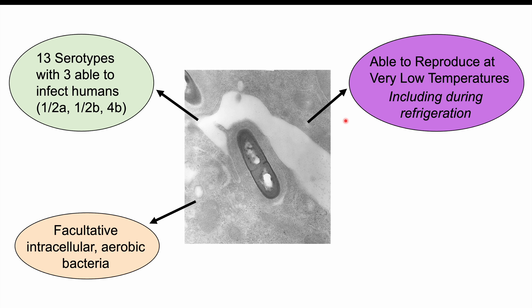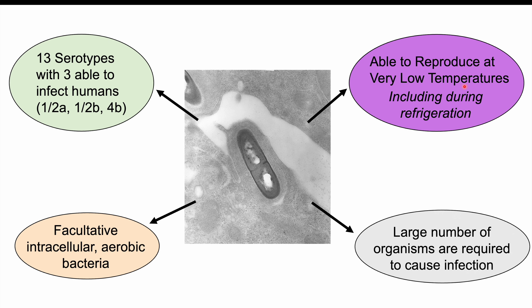An important factor is that Listeria can reproduce at very low temperatures, unlike most bacteria that slow reproduction in the cold. It can maintain a high reproductive rate even at refrigeration temperatures — one to four degrees Celsius. Larger numbers of organisms are generally required to cause infection, but because the bacteria reproduces even when refrigerated, contaminated food in the fridge can still harbor enough organisms to cause infection.